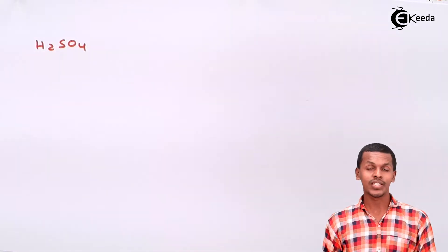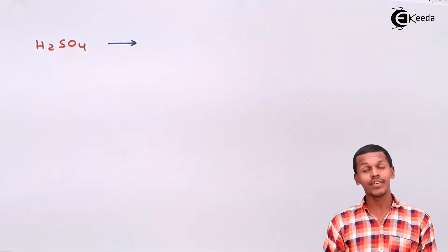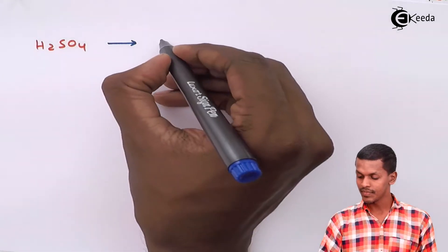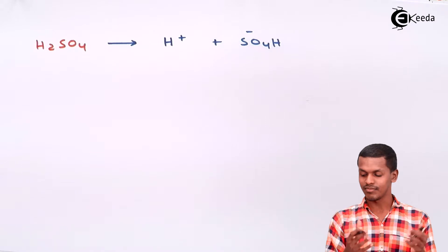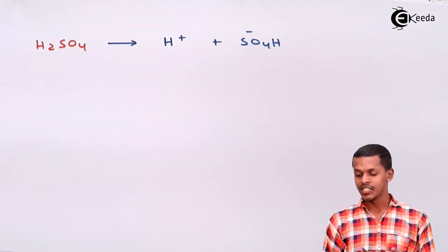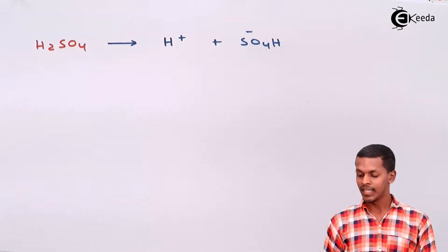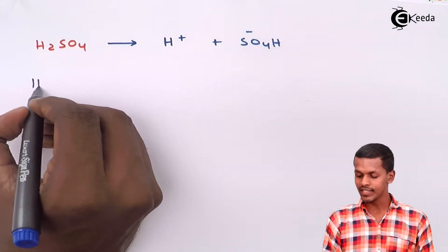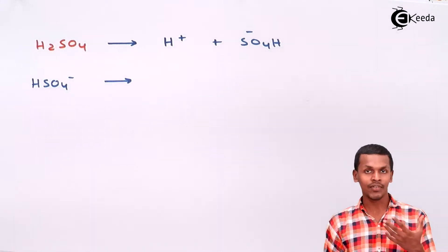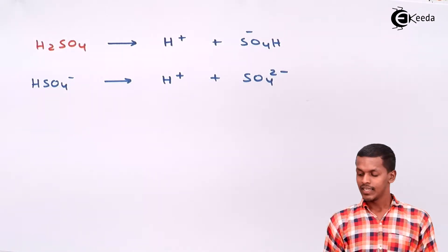For example, H2SO4 is a very strong acid so it will dissociate completely in two steps. The first step: it dissociates into H+ along with HSO4-. So one proton is liberated in the first step.